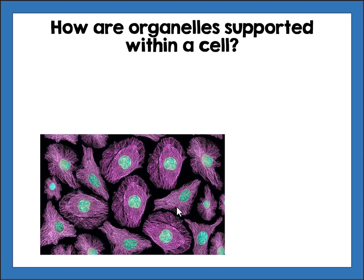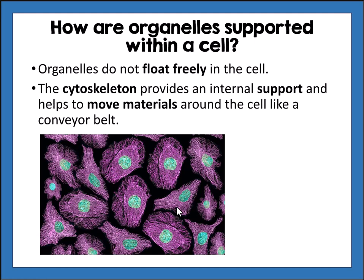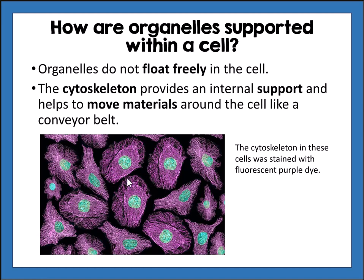How are organelles supported within a cell? Organelles do not float freely — there is a structure known as the cytoskeleton, 'cyto' meaning cell, which provides internal support and helps to move materials around the cell like a conveyor belt. This is what a real cytoskeleton structure looks like with the staining showing it purple — it's a web of proteins that helps move things around the cell.